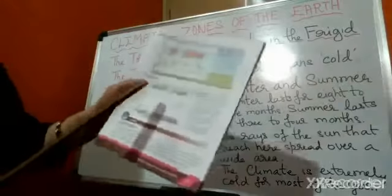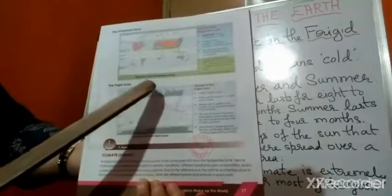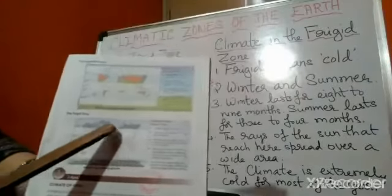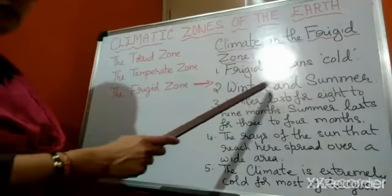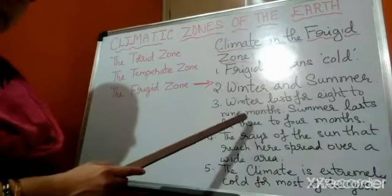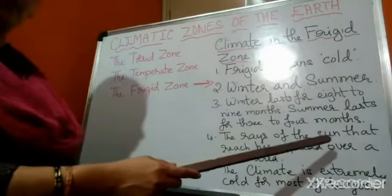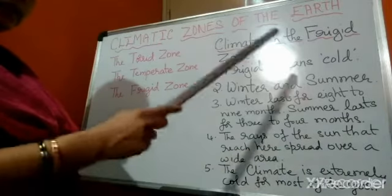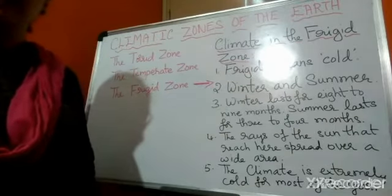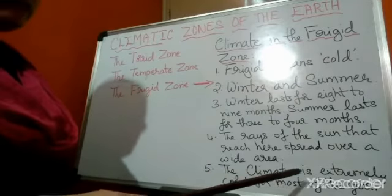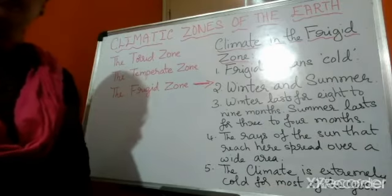This is the frigid zone, children. This is the north frigid zone and this is the south frigid zone. Frigid means very cold. We have winter and summer season here. Winter lasts for 8 to 9 months and summer lasts for 3 to 4 months. The rays of the sun spread over a wide area, so we receive very less sunlight, and the climate is extremely cold for most of the year.